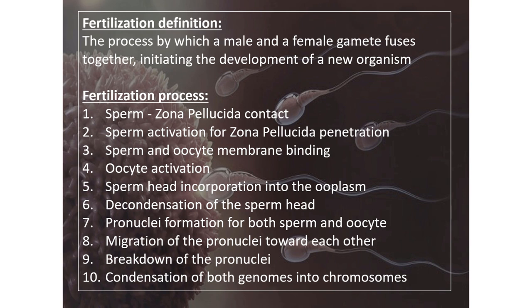Further steps include: sperm head incorporation into the ooplasm, decondensation of the sperm head, pronuclei formation for both the sperm and the oocyte, migration of the pronuclei towards each other, and breakdown of the pronuclei and condensation of both genomes into chromosomes, giving rise to a new organism.